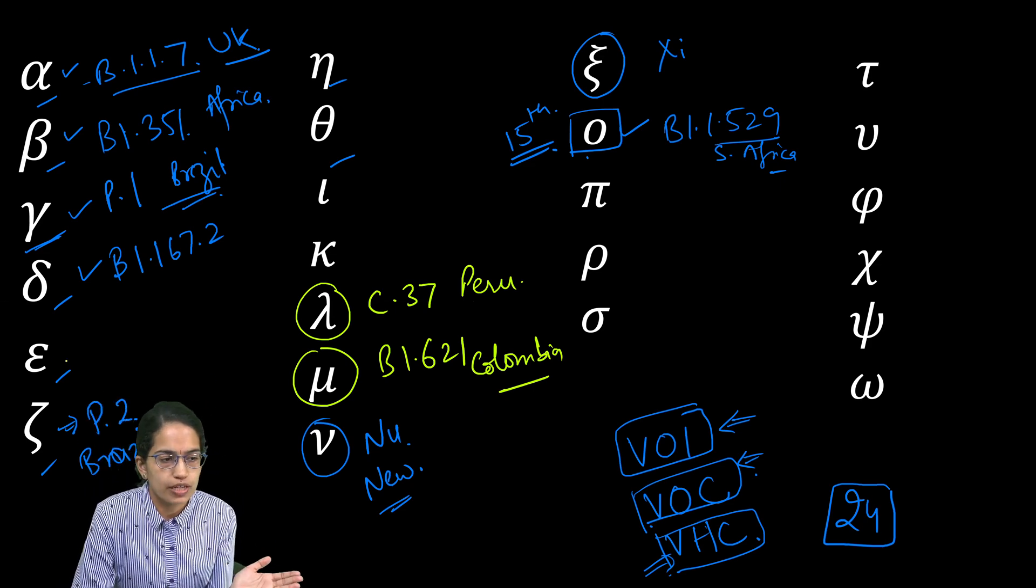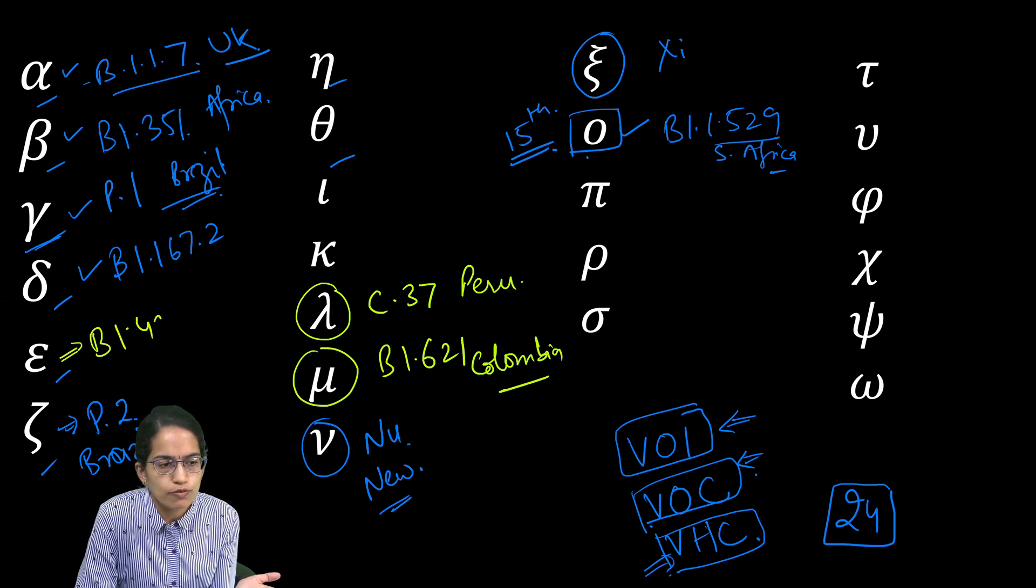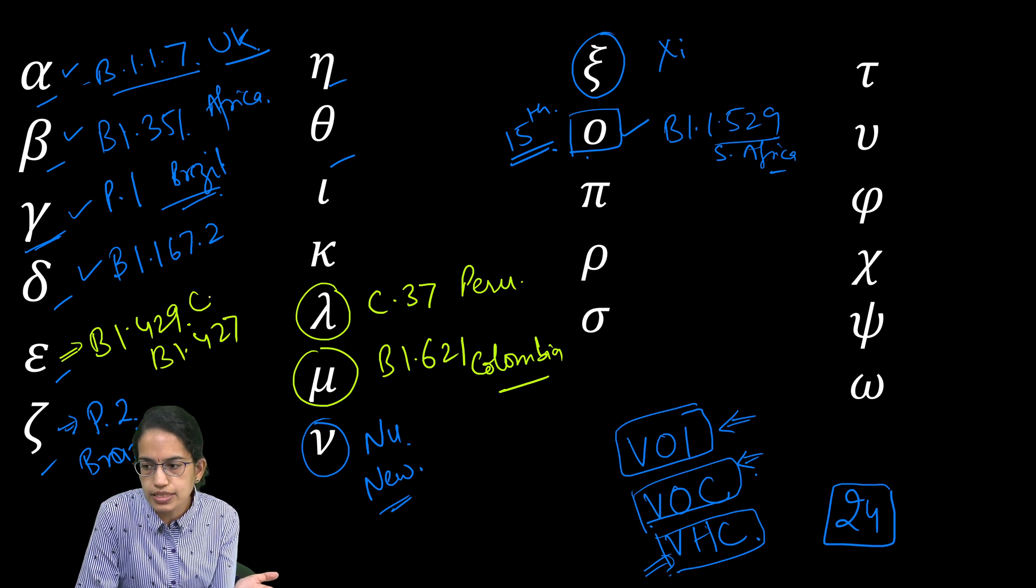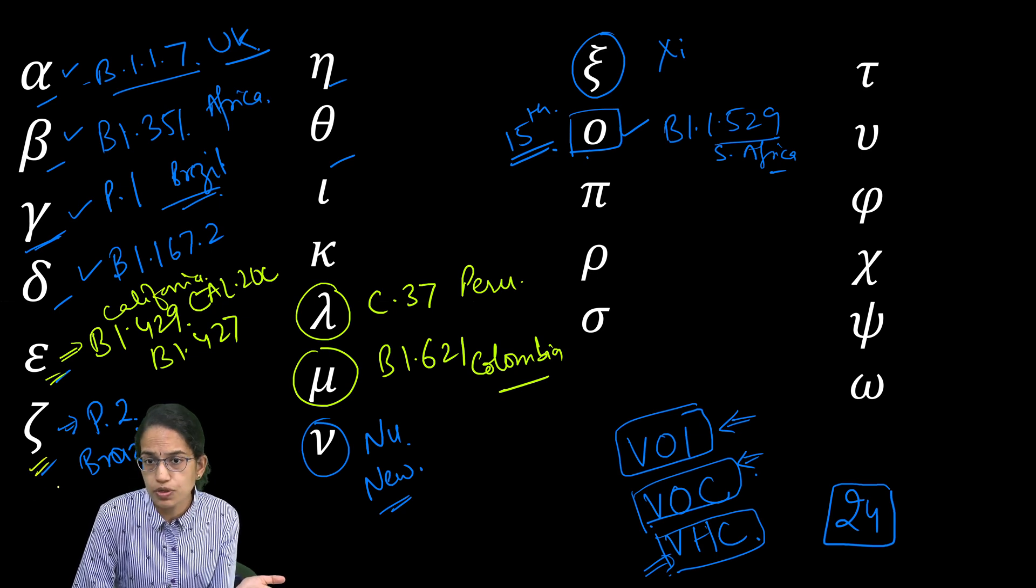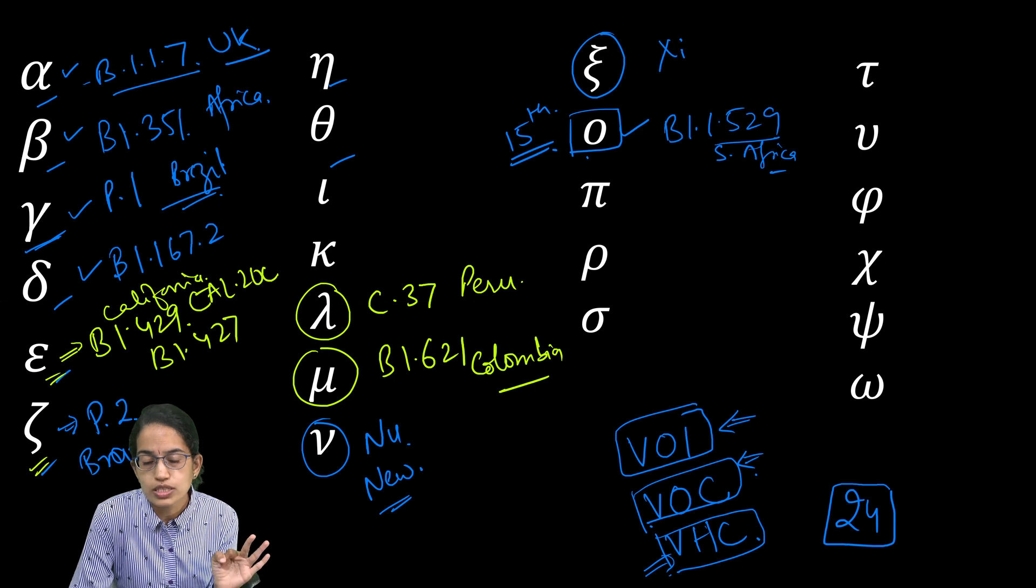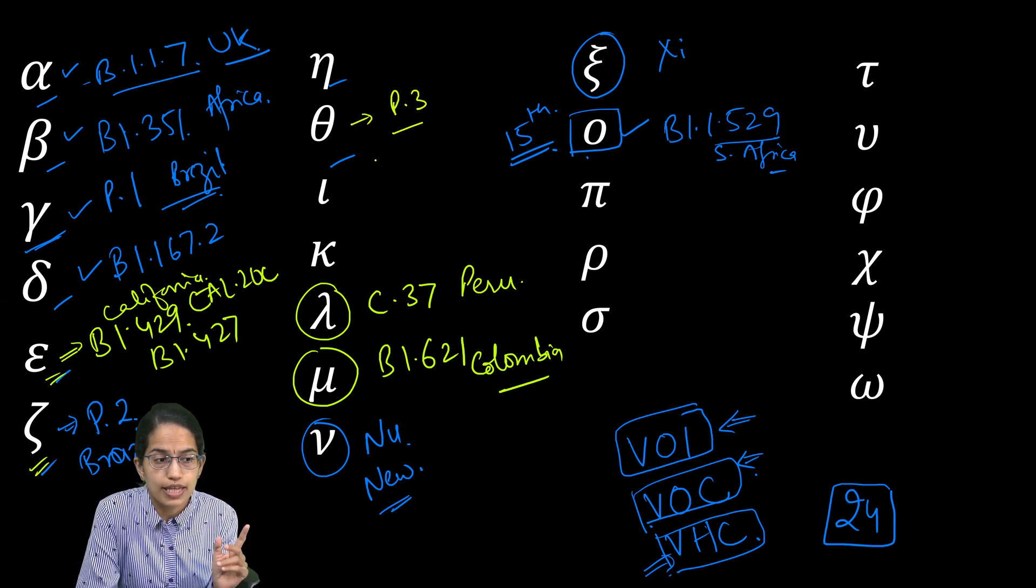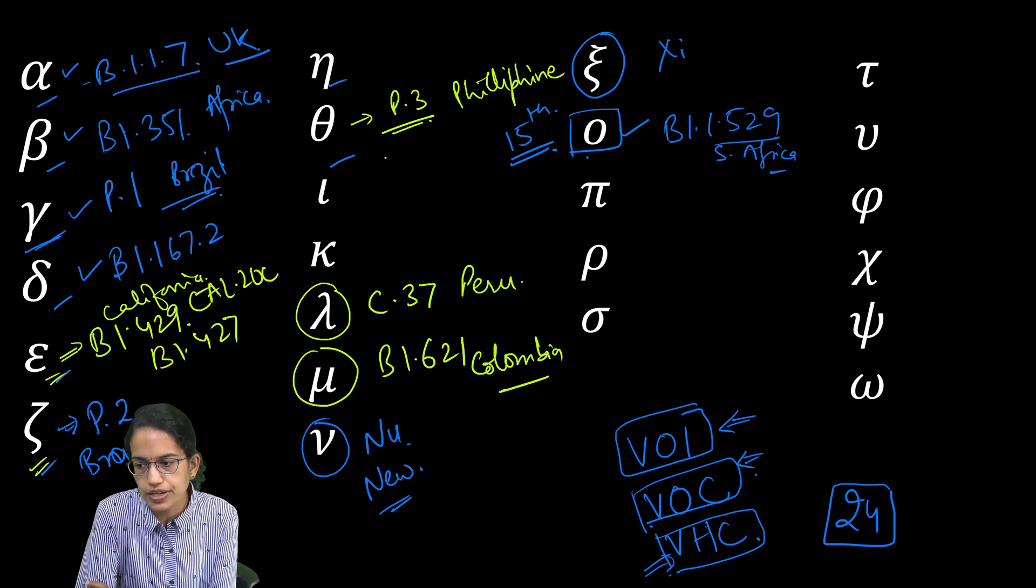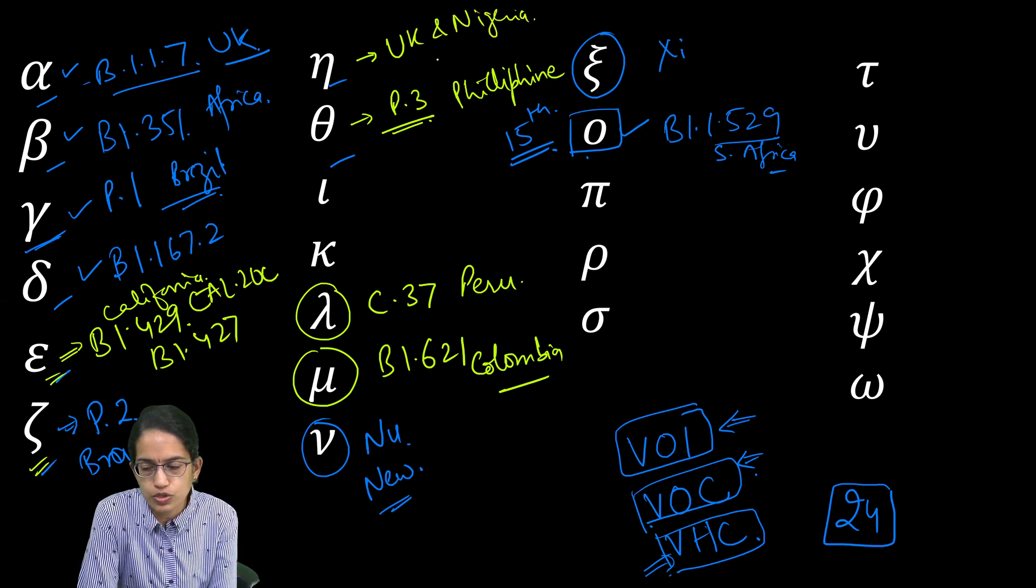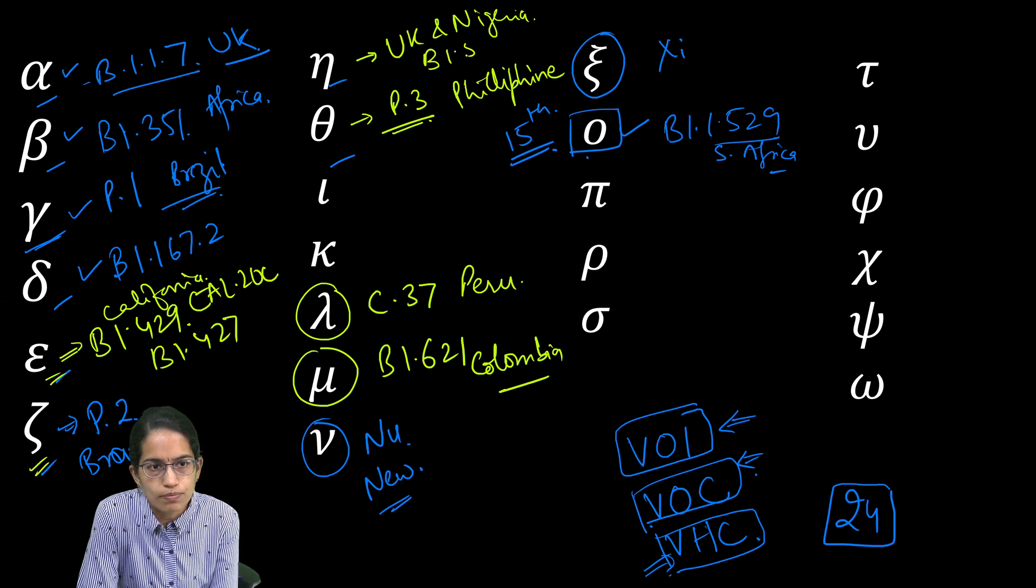We also had the former variants of interest. Epsilon B1.429, B1.427 and CAL.20C, these are all seen from California as the first originating region. Then we had zeta which we already mentioned from Brazil which was a lineage of P2. Then there was theta which was again the lineage P3 but that was not from Brazil, this was from Philippines. Eta variant was the variant which was seen from UK and Nigeria as the first nations where it was found and the eta variations are B1.525.